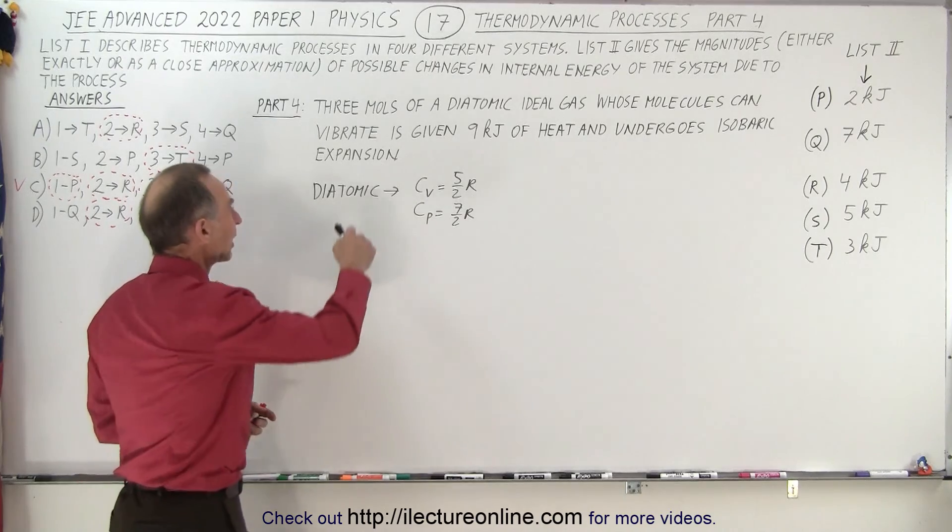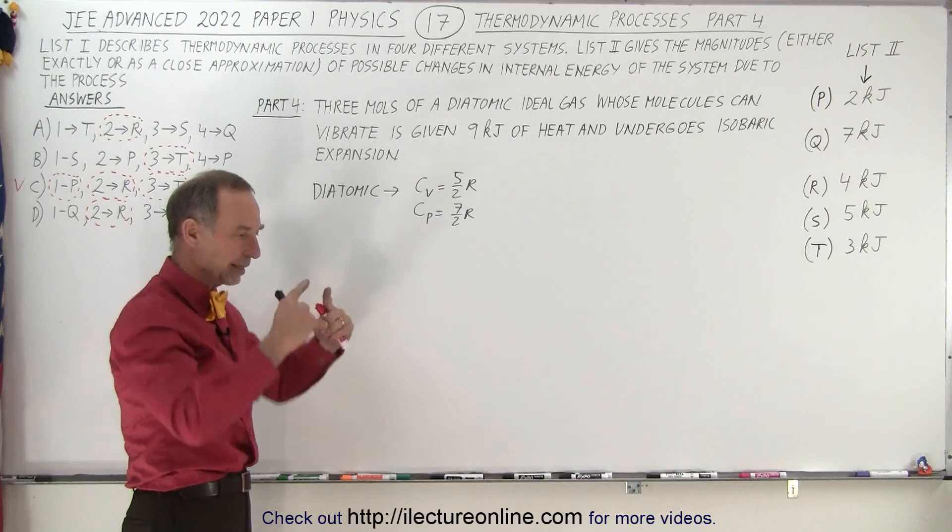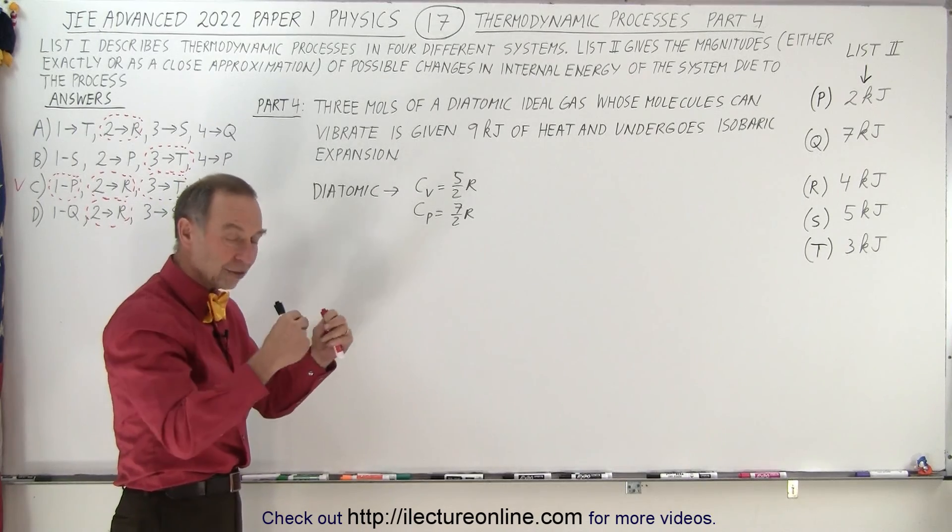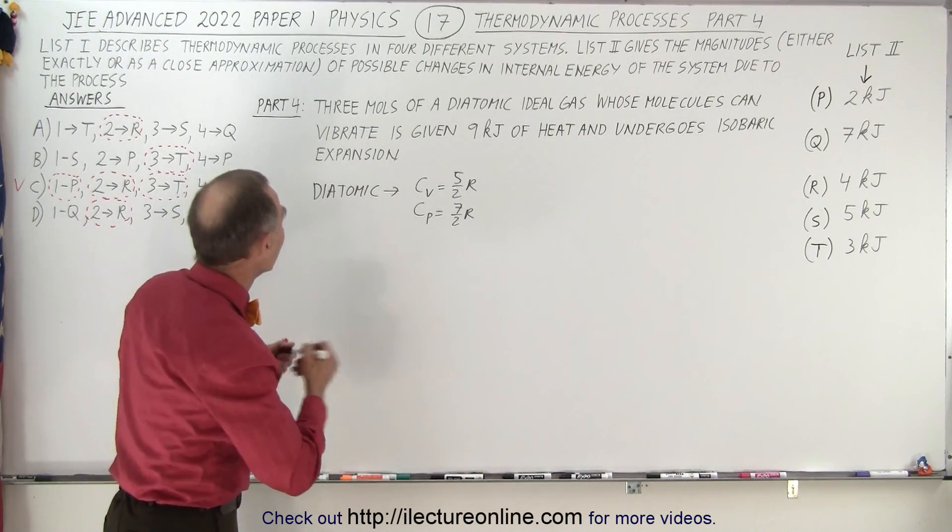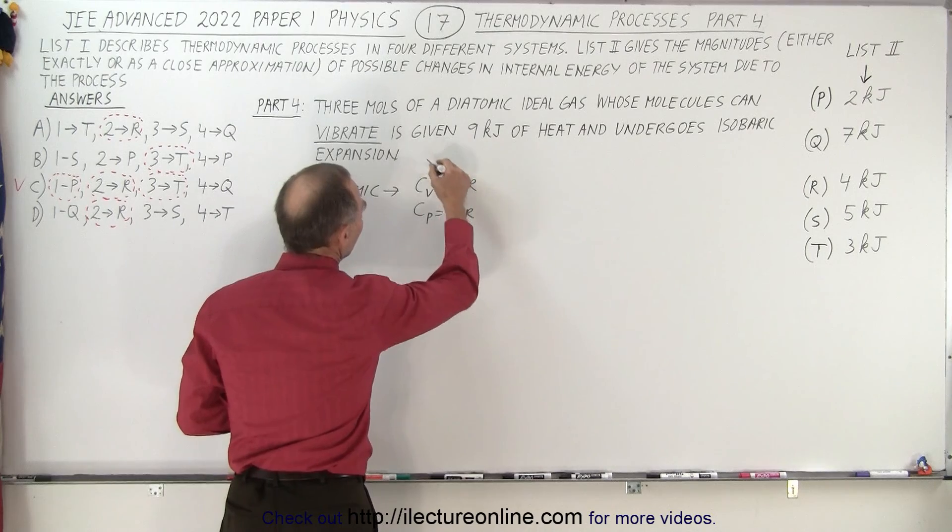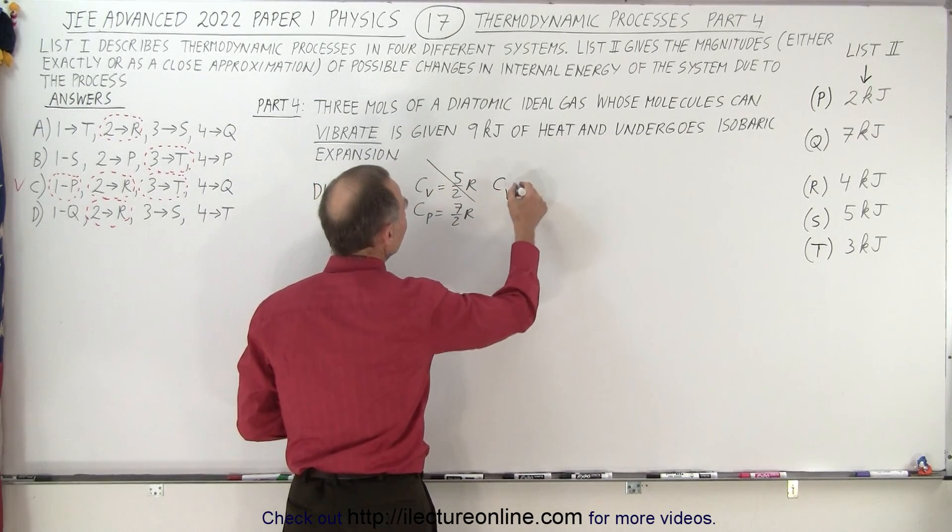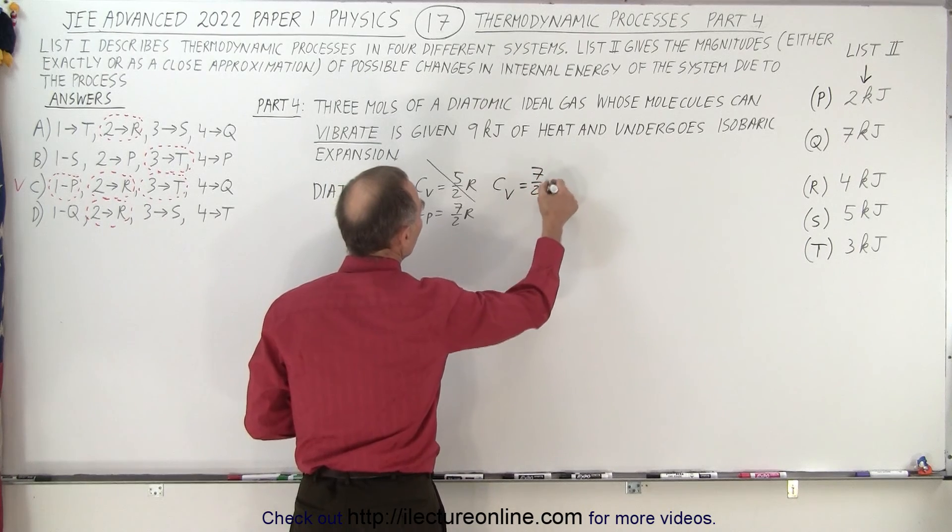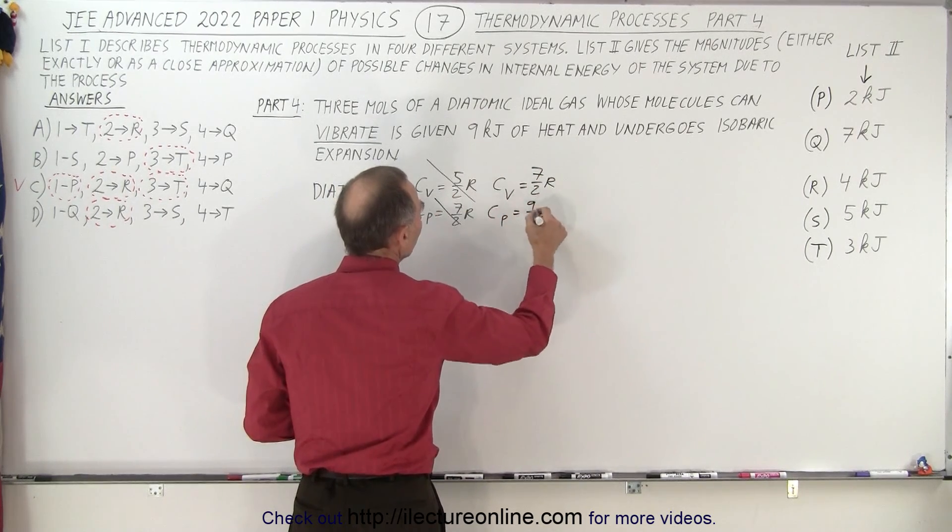But now they tell us that they can also vibrate. They have a diatomic molecule which means they can vibrate like this and it can vibrate like this, so that gives it two additional degrees of freedom. So because of the vibration we can then say that we're not going to use this, we're going to give it two additional degrees of freedom which means C sub V is equal to seven over two R and C sub P is equal to nine over two R.